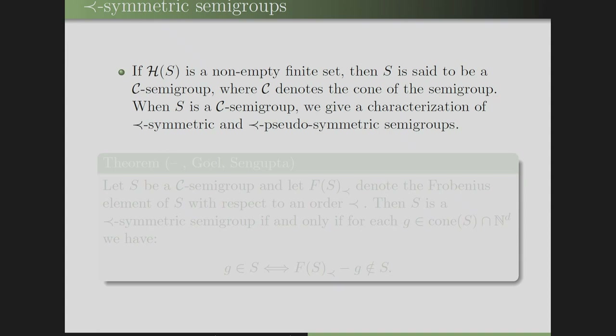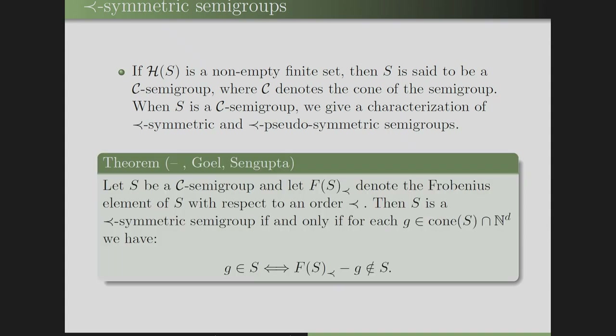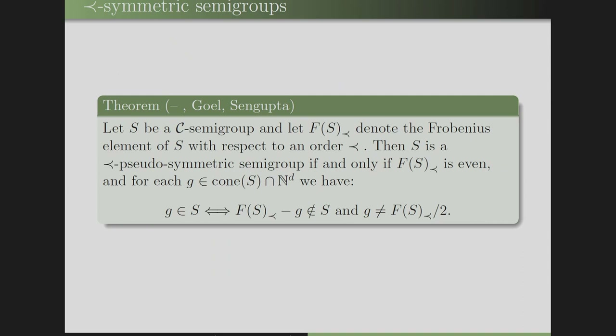Fix a term order and suppose F(S) exists. If PF(S) = {F(S)} only, then S is called a symmetric semi-group; if PF(S) = {F(S), F(S)/2}, then it is called a pseudo-symmetric semi-group. For C semi-groups — where H(S) is non-empty and finite — we give a characterization: S is symmetric if and only if for each G in cone(S) ∩ N^D, we have G in S if and only if F(S) minus G is not in S, with an analogous characterization for pseudo-symmetric.